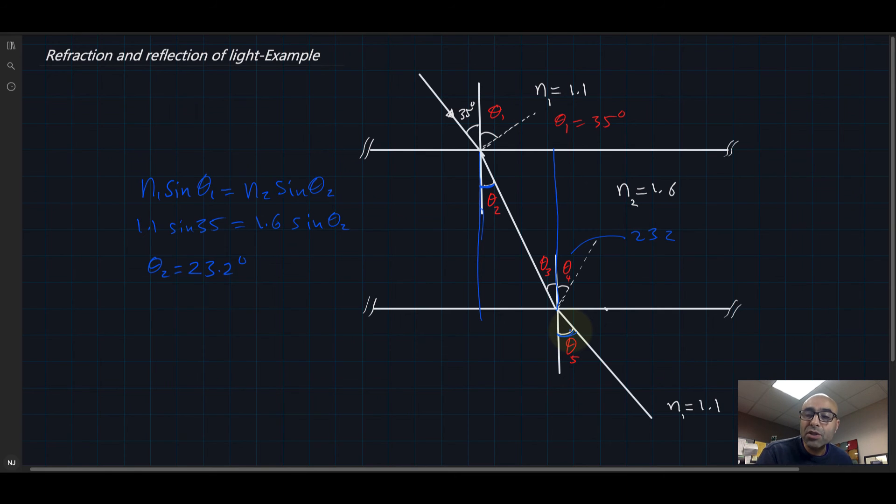Look, you can find it in two ways using Snell's law, the same here, assuming that this is n1, this is n2. You can solve for it and you can find the angle. Or you can just pay attention here: it's coming from n1 and it's going out to n1, so this angle must be equal to this angle.